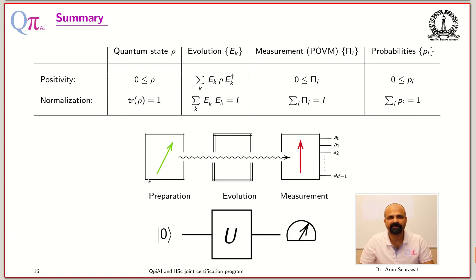Quantum mechanics has these three basic elements: preparation, evolution, and measurement—three basic fundamental blocks. And for these three basic elements, quantum mechanics gives you three postulates.